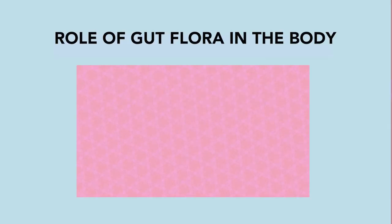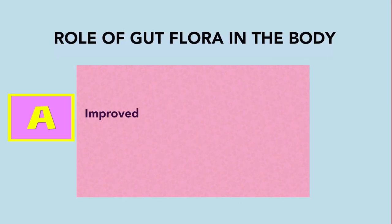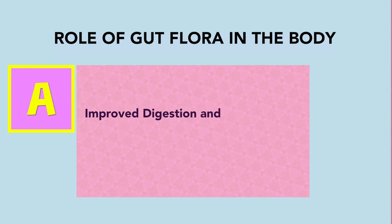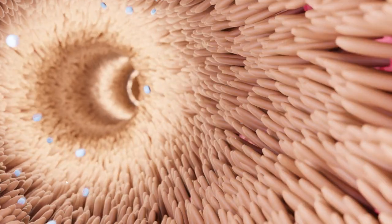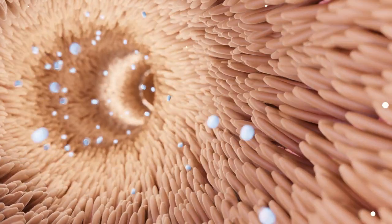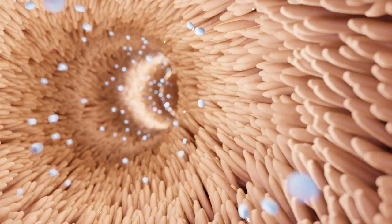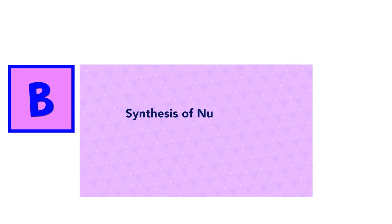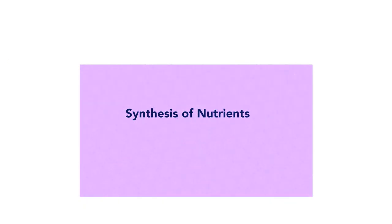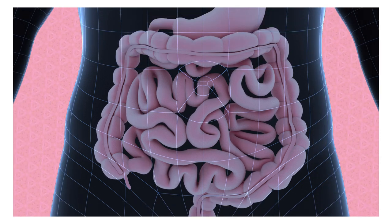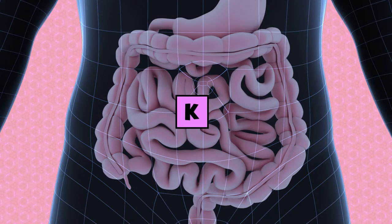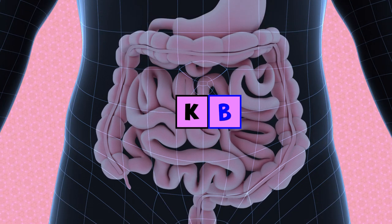Role of gut flora in the body. A: Improved digestion and absorption — gut flora helps break down and digest food, allowing nutrients to be properly absorbed. B: Synthesis of nutrients — gut flora is responsible for synthesizing vitamins and nutrients, including vitamin K and some B vitamins.